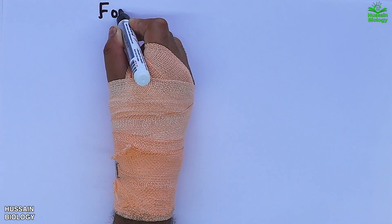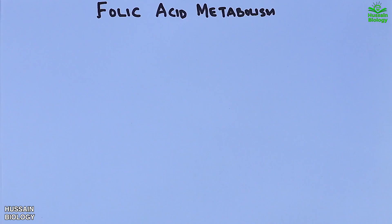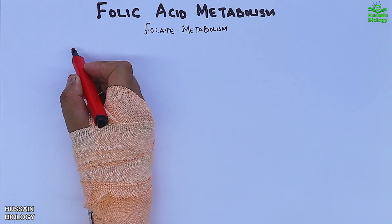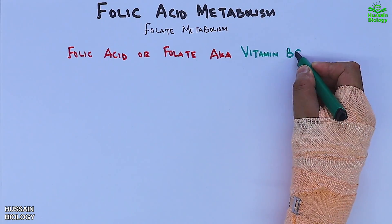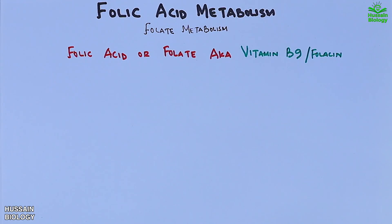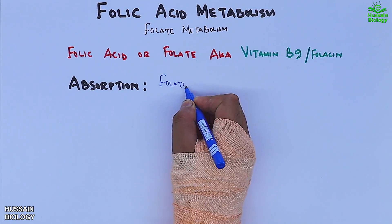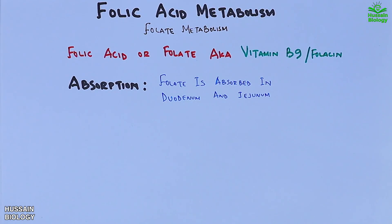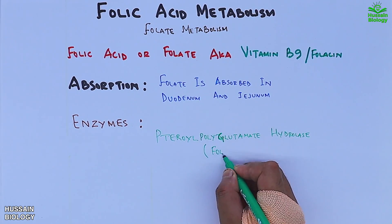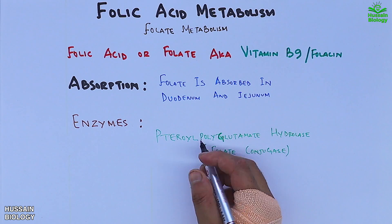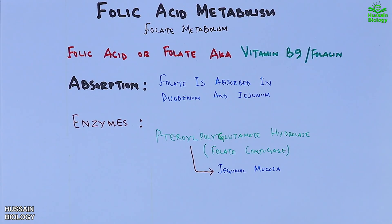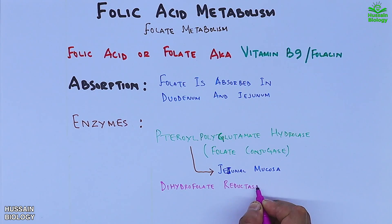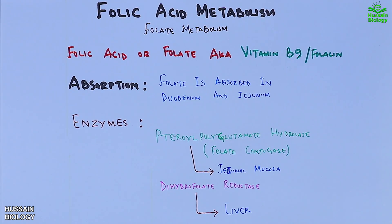In this video we will be discussing folic acid metabolism, also known as folate metabolism. Folic acid or folate is also known as vitamin B9 or folicin. Folate is absorbed in the duodenum and jejunum, the initial part of the small intestine. There are two important enzymes in this metabolism: first is the pteroyl polyglutamate hydrolase enzyme, also known as folate conjugase, present in the jejunal mucosa, and the second enzyme is dihydrofolate reductase, found in the liver.